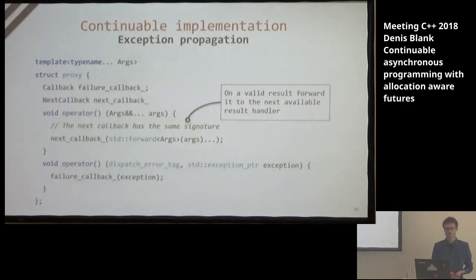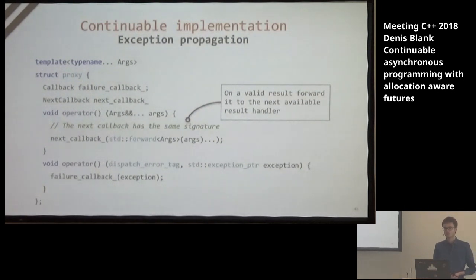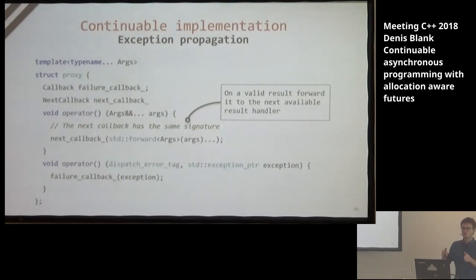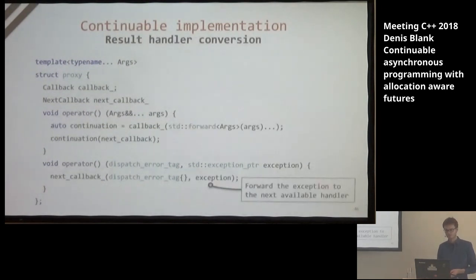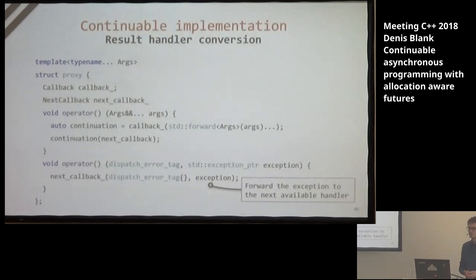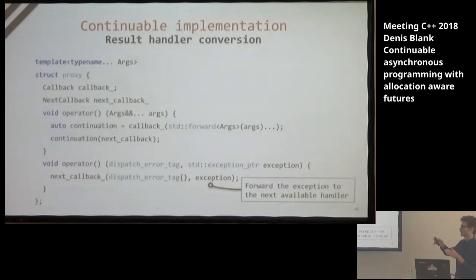Exception propagation is implemented as follows: when we chain an exception handler, we forward every valid result to the next handler, since the asynchronous argument types don't change when appending a failure handler. But we handle failures by storing the failure callback and passing the exception to it. For the result handler, it's the same but in swapped order — we handle every result while routing exceptions to the next available failure handler, which will forward the exception further if it doesn't handle it.